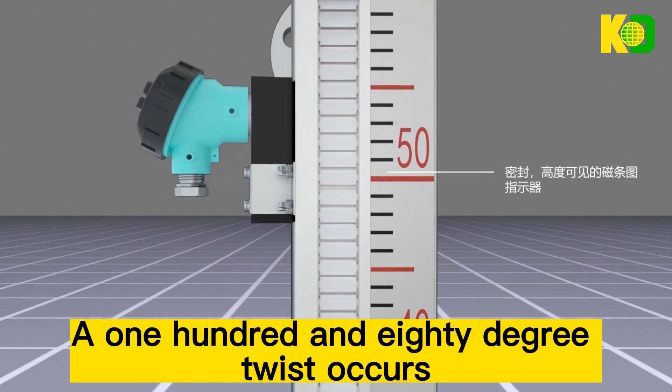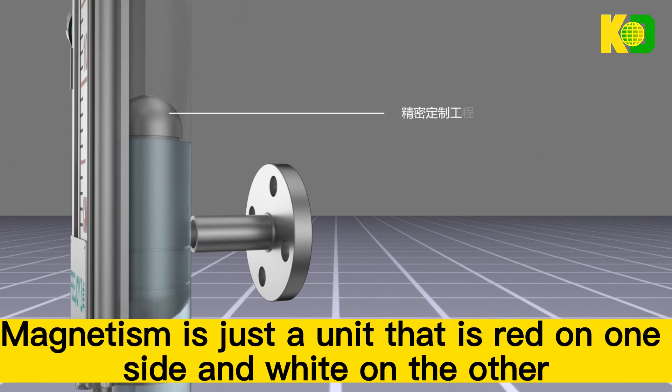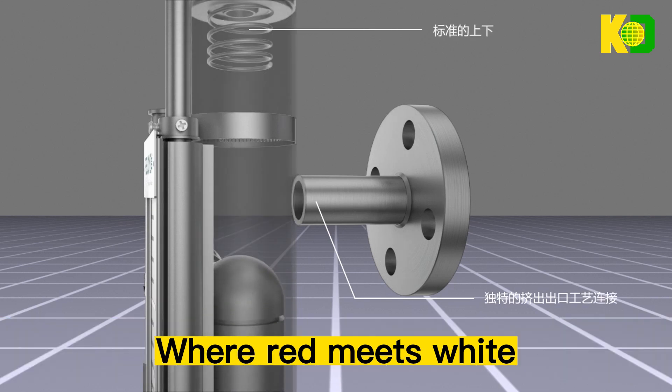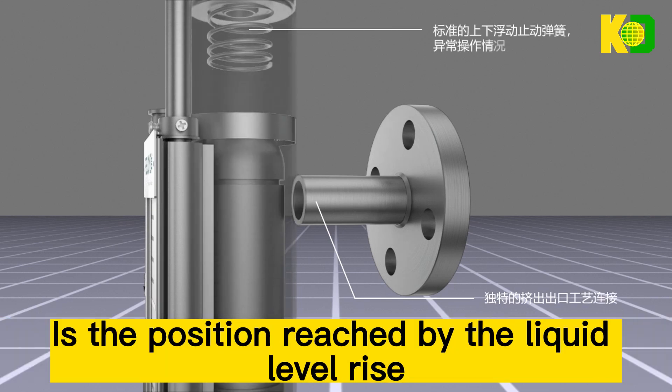A 180-degree twist occurs. The magnetic unit is red on one side and white on the other. Where red meets white is the position reached by the liquid. Level rise.